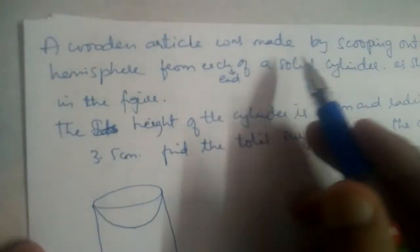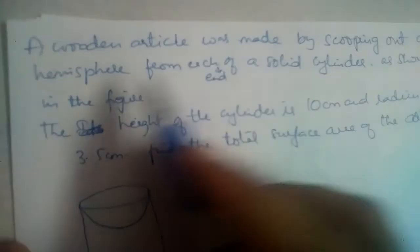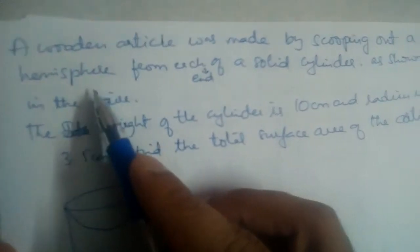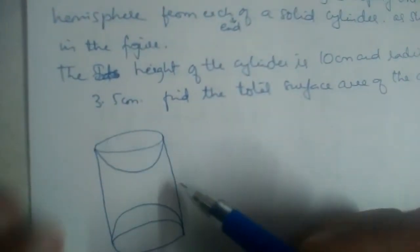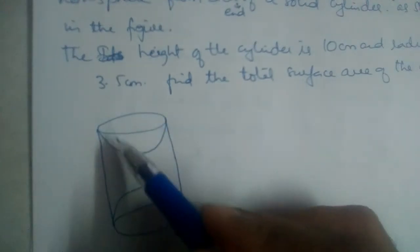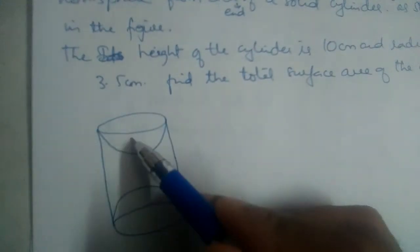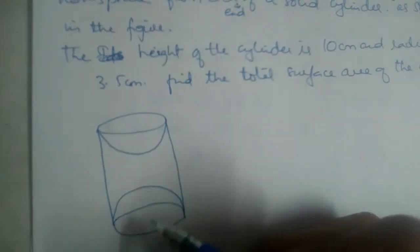A wooden article was made by scooping out a hemisphere from each end of a solid cylinder as shown in the figure. We have a cylinder and we are taking out hemispheres from either end, from both the ends.